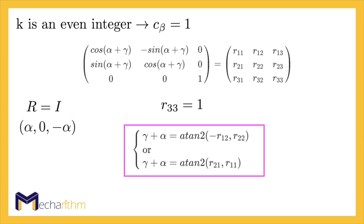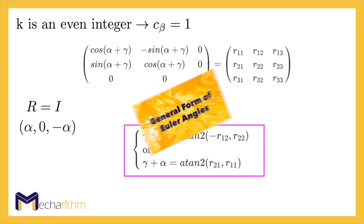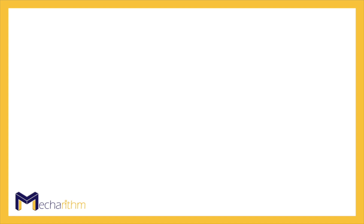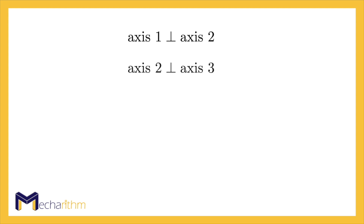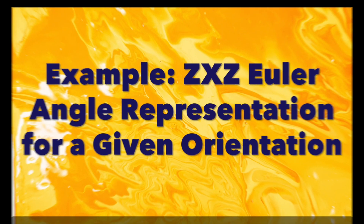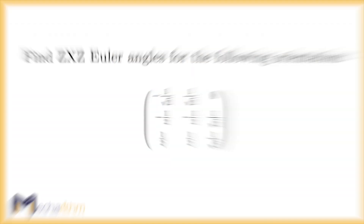In general, if rotation axis one is orthogonal to rotation axis two, and rotation axis two is orthogonal to rotation axis three, and axes one and three are not necessarily orthogonal to each other, then the three-parameter explicit representation for SO(3) can be expressed by Euler angles as successive rotation operators about these axes. Let's see an example.